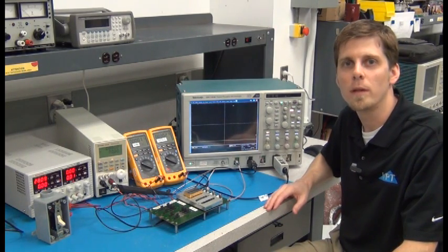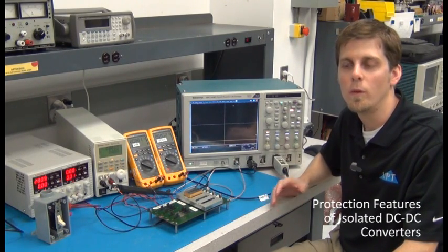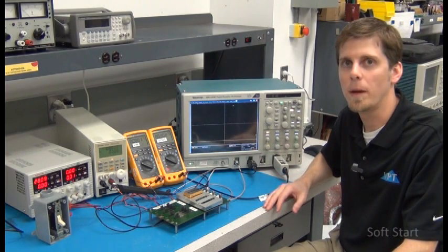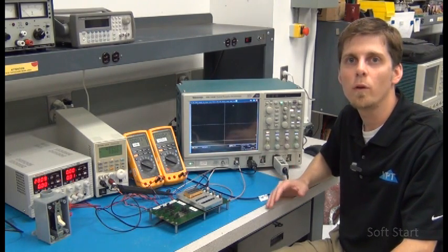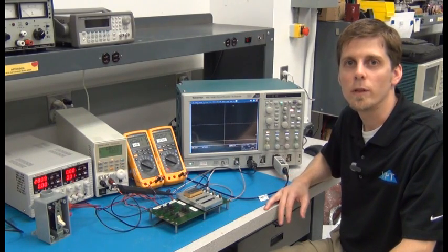Today I want to talk about some of the protection features in our isolated DC-DC converters with a 28-volt input. In particular, I want to talk about soft start, under voltage lockout, the overload current limit, and short circuit.